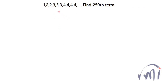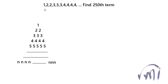I was wondering how to solve this problem and then I just arranged these numbers in the form of a triangle, and suddenly this problem became very easy. When I arrange these numbers in the form of a triangle or a pyramid, row 1 has one 1, the second row has two 2's, the third row has three 3's, and the fourth row has four 4's.